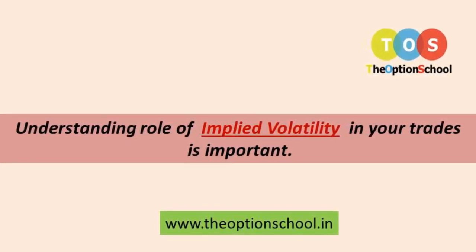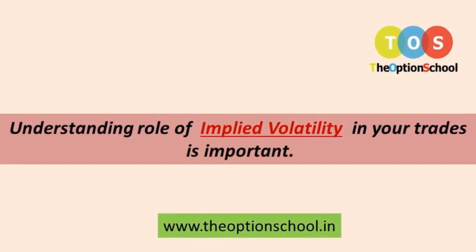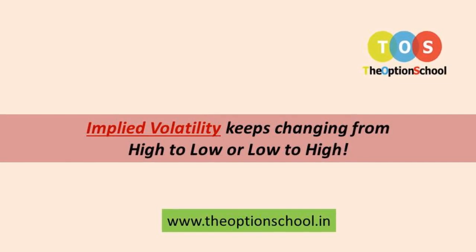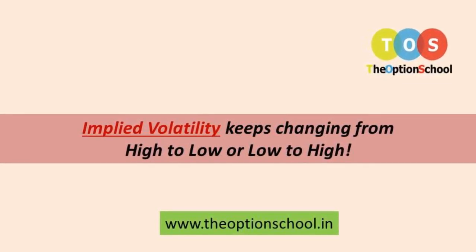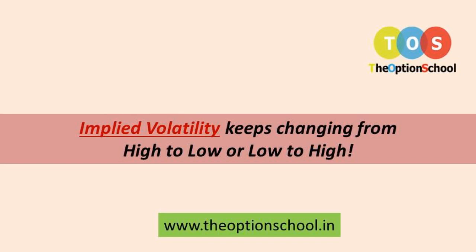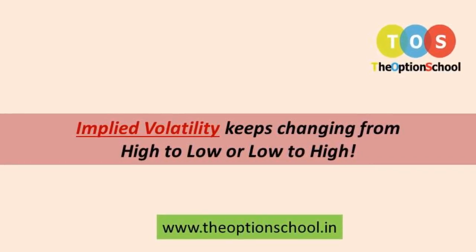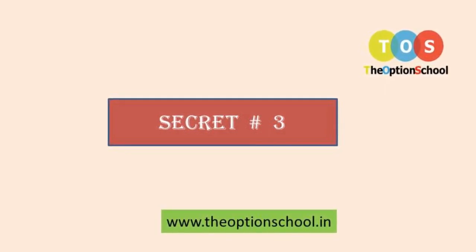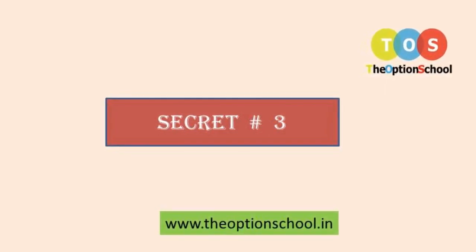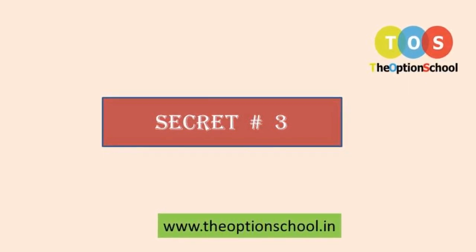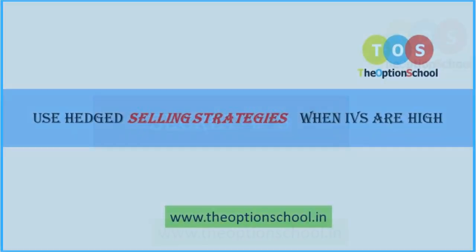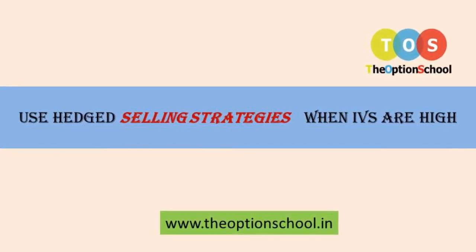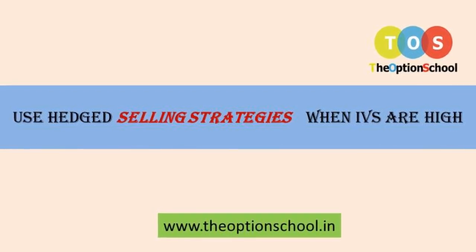Understanding the role of implied volatility in your trades is very important. As we all know, implied volatility keeps changing from high to low, low to high, or again high to low. So Secret Number Three is: what to do when implied volatility is high, or what to do when implied volatility is low.